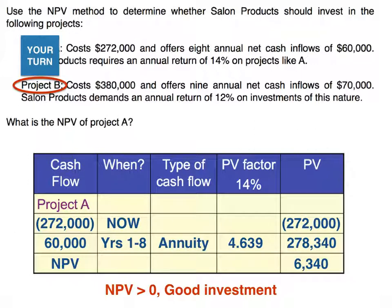The difference between the present value of the cash inflows and the capital outlay of $272,000 gives us a net present value of $6,340 — a positive number. So this would be a good investment per the net present value model. Keep in mind, the net present value doesn't tell you what the actual return is. It only tells you whether you're getting more than, exactly, or less than your required rate of return. In this case, we're getting more, though probably not much more, as the NPV is relatively small.